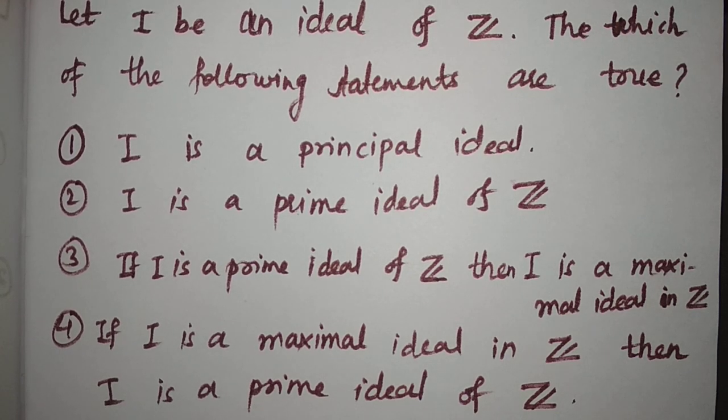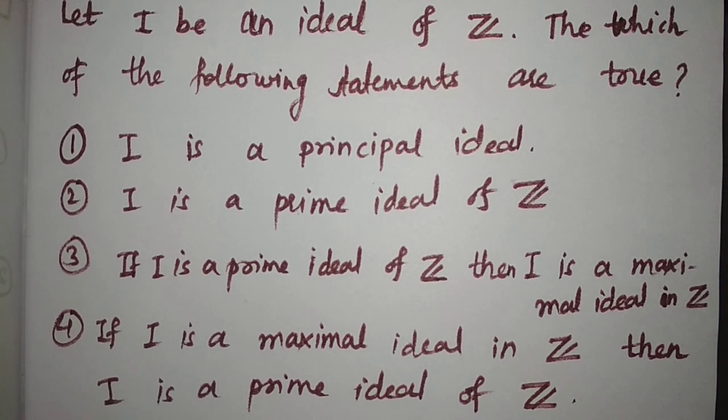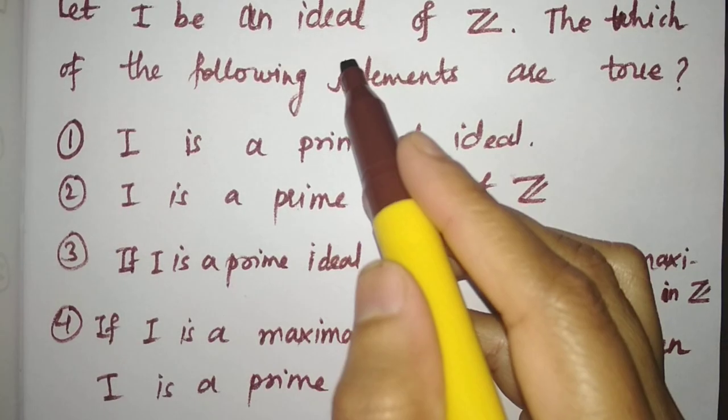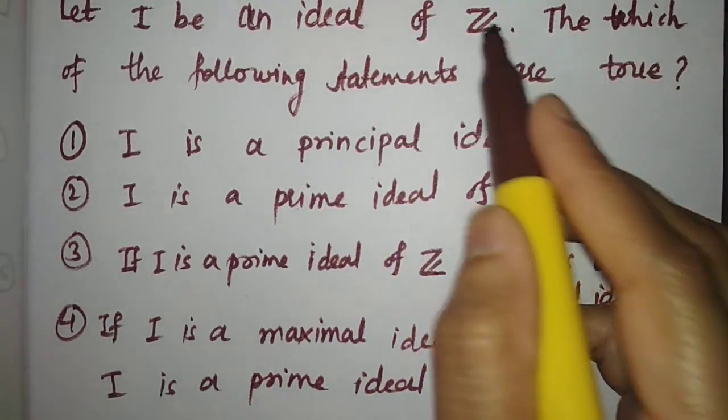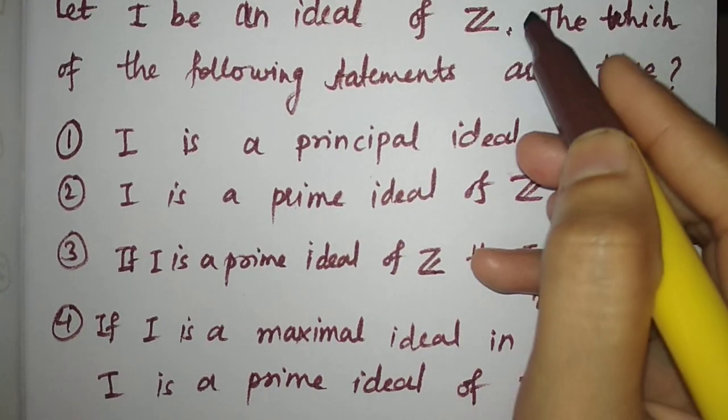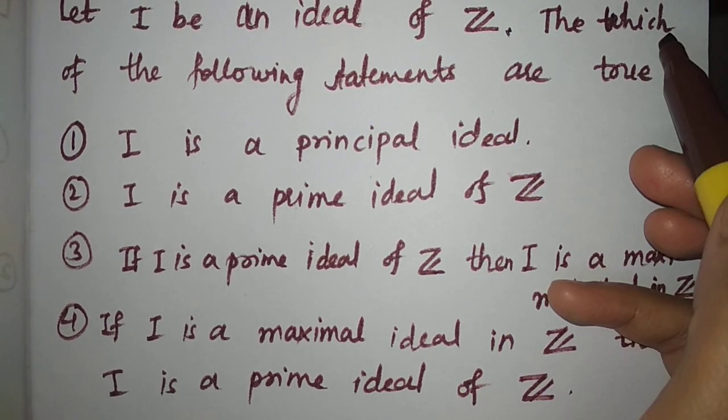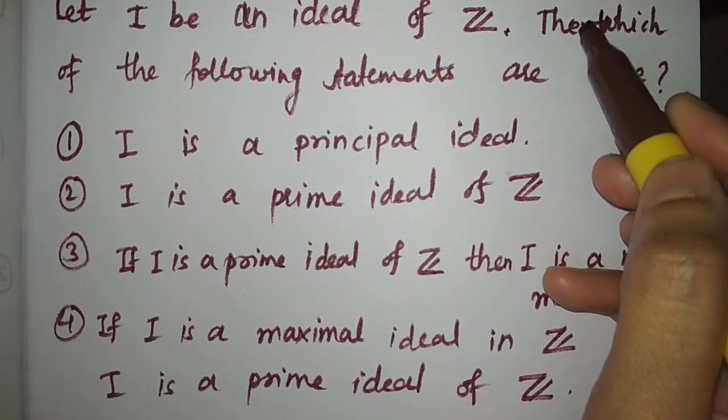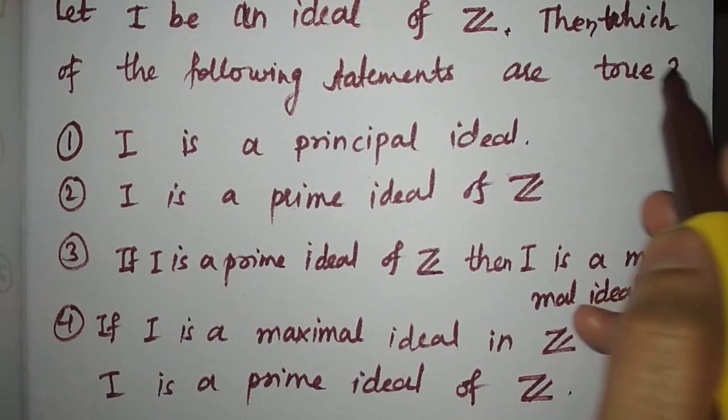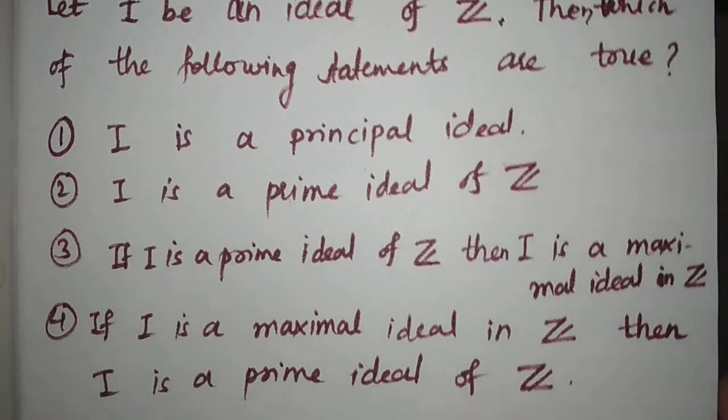Now let us solve another question from part C. Let I be an ideal of Z, where Z is the ring of integers. Which of the following statements are true? The first statement...